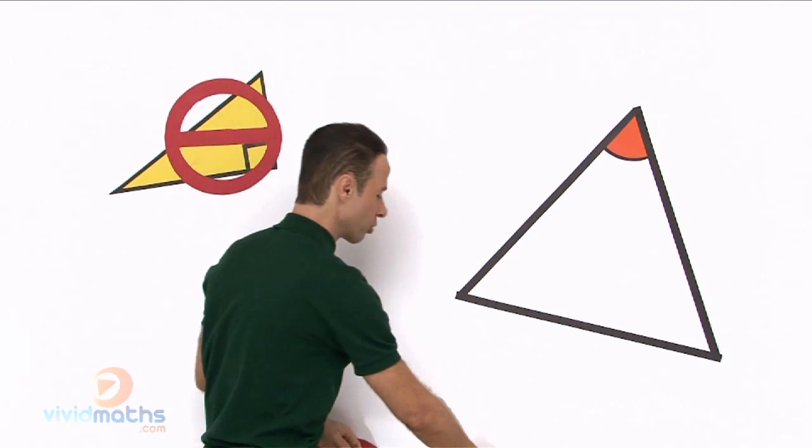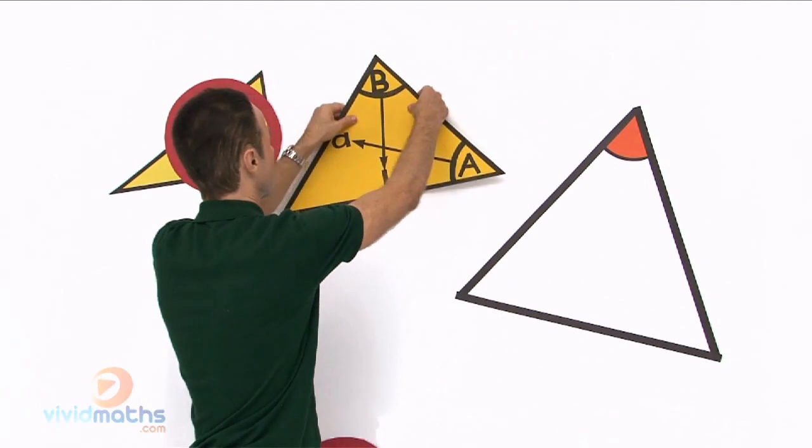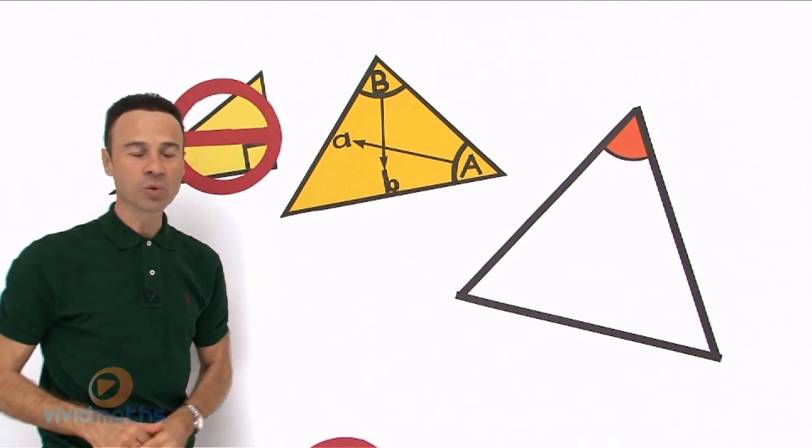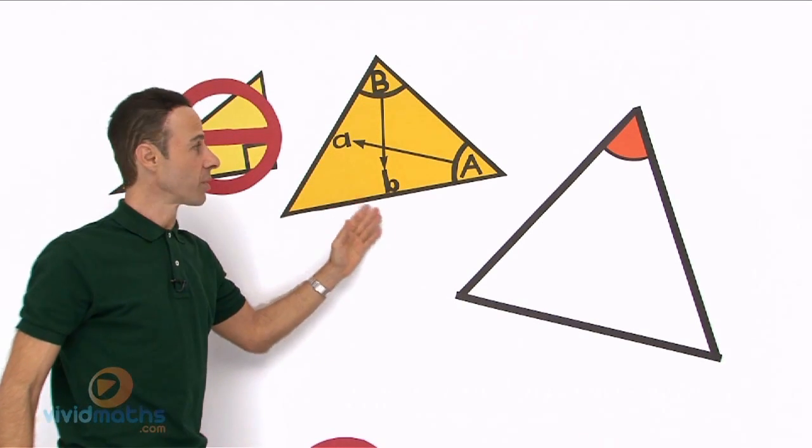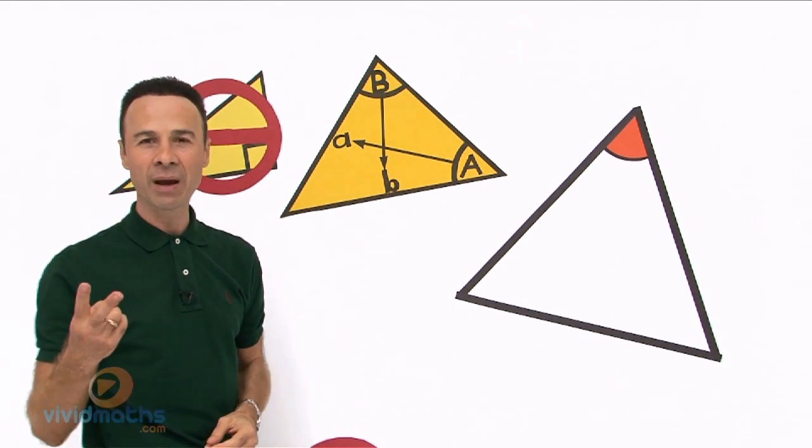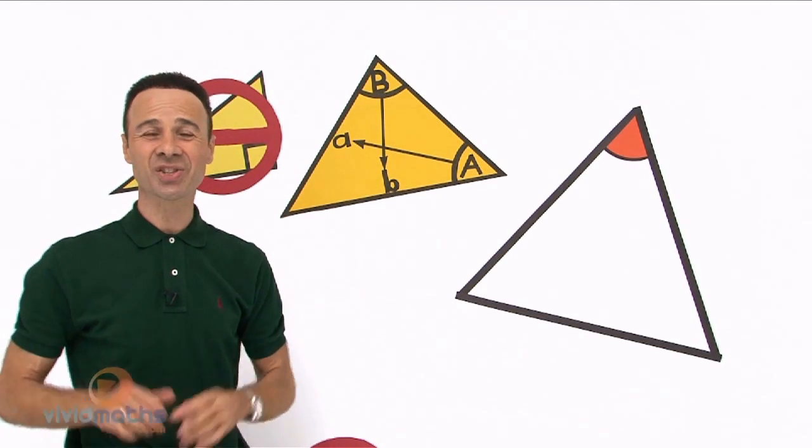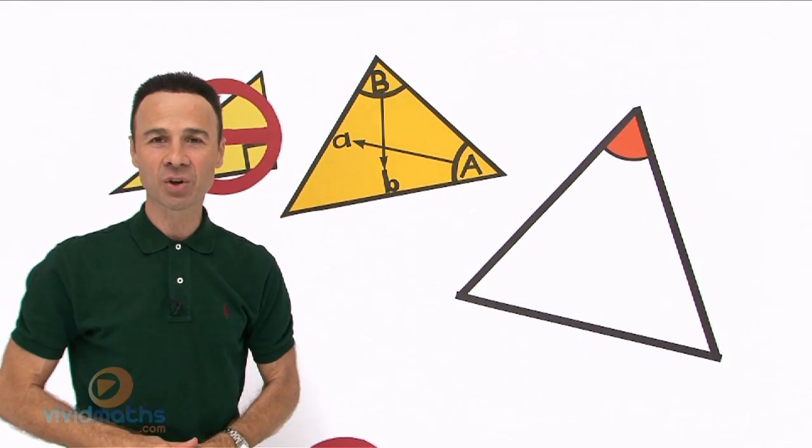So a non right angle triangle would be something like this. What happens if we got something like this, a non right angle and we have an angle opposite of length, an angle opposite of length. In other words we have two angles opposite two lengths and we solve them using the sine rule, that's a great tool.